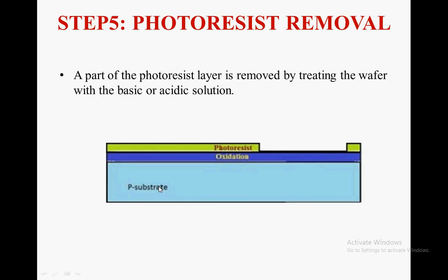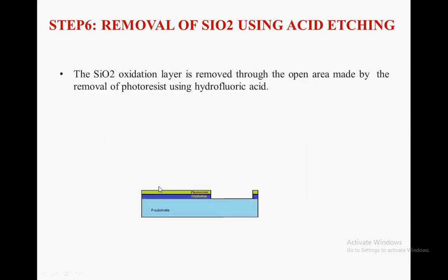Step 5 is photo resist removal. A part of the photo resist layer is removed by treating the wafer with a basic or acidic solution. Step 6 is removal of silicon oxide using acidic etching — the silicon oxide layer is removed through the open area made by the removal of photo resist, using hydrofluoric acid.